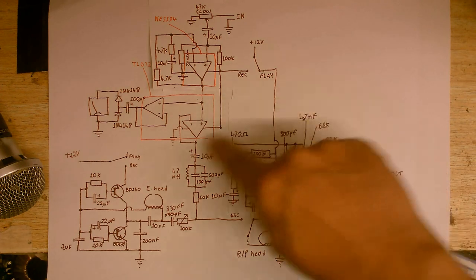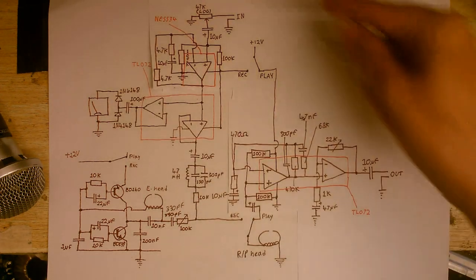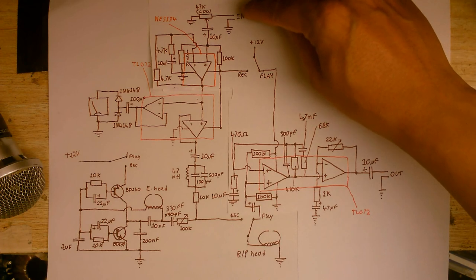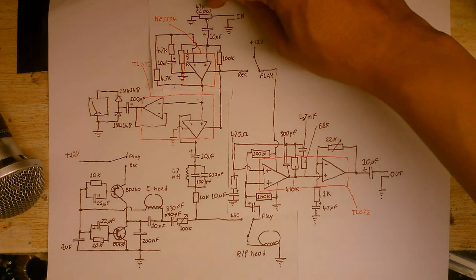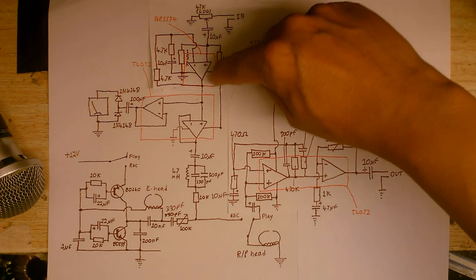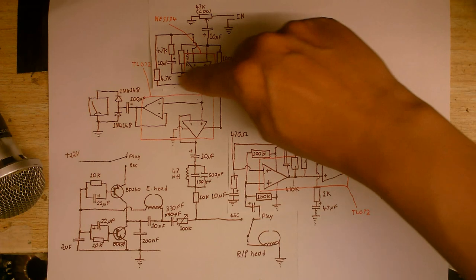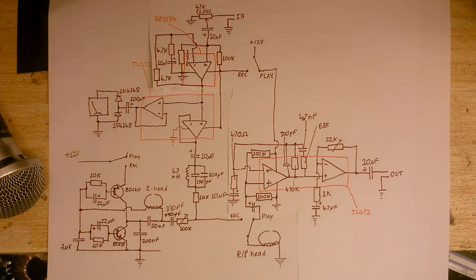Then over here we've got the recording amplifier. Our audio signal comes in here. You can control the level by this potentiometer here, and that gets amplified by this op-amp here. Just gives it a little bit of a boost.